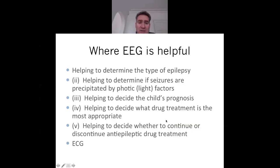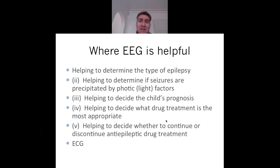EEG is often misperceived as always helpful in diagnosing epilepsy. You can have normal children with an abnormal EEG, for example a slowed background. Conversely, a child with epilepsy may have a normal EEG at a given point in time. We use EEG to help determine the type of epilepsy, for example if seizures are precipitated by photic or light factors, to decide prognosis, appropriate drug treatments, and whether to continue or discontinue antiepileptic drug treatment.